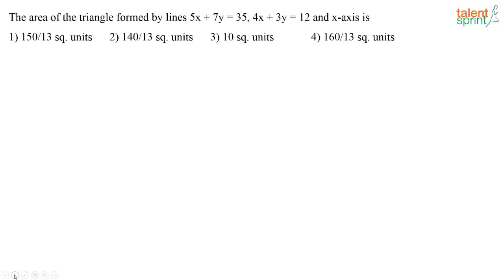The area of the triangle formed by the lines 5x plus 7y is equal to 35 and 4x plus 3y is equal to 12 and the x-axis is dash.